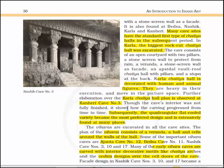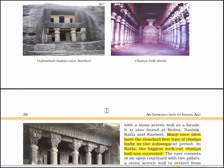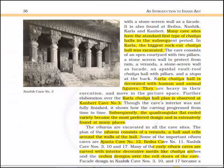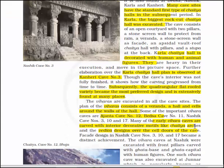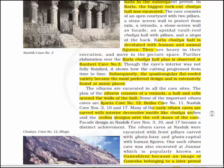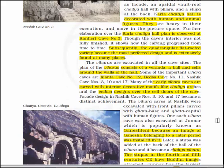Though the cave's interior was not fully finished, it shows how the carving progressed from time to time. The quadrangular flat-roofed variety became the most preferred design and is extensively found at many places. Viharas are excavated in all the cave sites and the plan of Viharas consists of a veranda, a hall and cells around the walls. Some important Vihara caves are Ajanta cave number 12, Bedsa cave number 11, Nashik cave numbers 3, 10 and 17. Many early Vihara caves are carved with interior decorative motifs like chaitya arches and Vedika designs over cell doors. Pasad design in Nashik cave numbers 3, 10 and 17 became a distinct achievement.